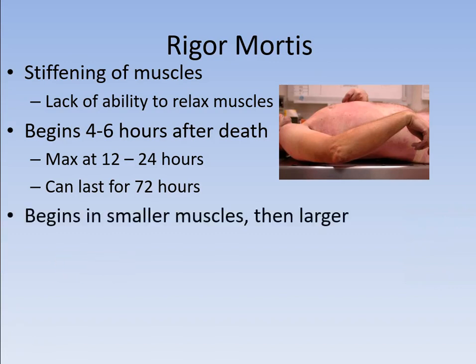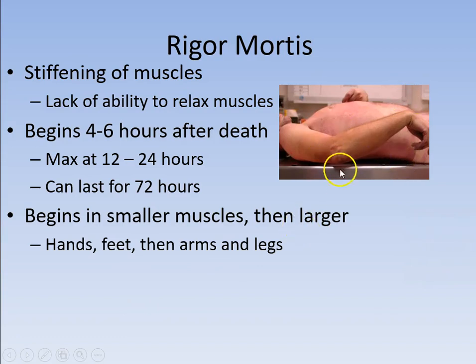Rigor mortis generally begins in the smaller muscles — the hands, the arms — and then it moves to the larger muscles. The feet, hands, arms, and legs will show signs of stiffening first, and then the larger muscles in the main trunk of the body will start to show stiffness. If rigor mortis is just beginning in the hands and feet, that tells you it's an earlier time; where the entire body appears stiff, we know we're into a much longer period of time.